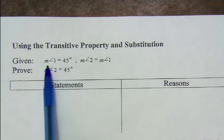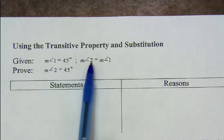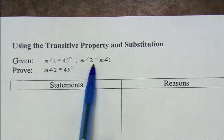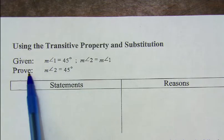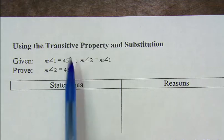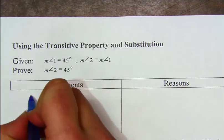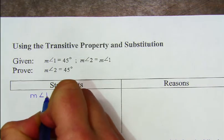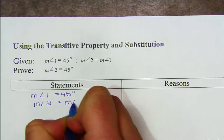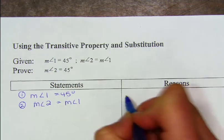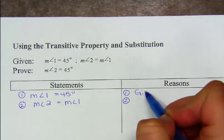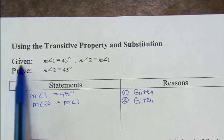In this proof, we have: the measure of angle one is 45 degrees, and the measure of angle two is equal to the measure of angle one. Those are our given statements — the clues to help us out. What they want us to prove is that angle two is equal to 45 degrees. So we start off with our givens: angle one is equal to 45 degrees, and the measure of angle two is equal to the measure of angle one. The reason those two things are true is because they were given.